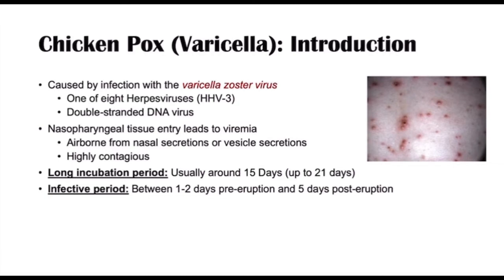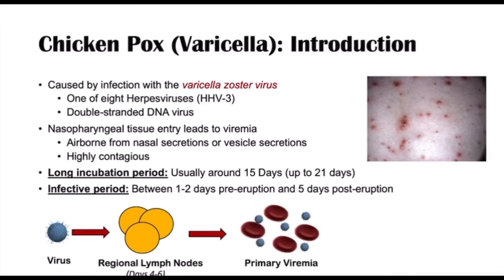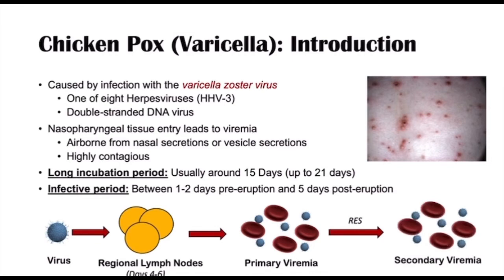The virus gains entry through the nasopharyngeal tissue and multiplies in regional lymph nodes between days four to six. Afterwards, the virus leads to a primary viremia — virus in the blood — and then enters into the reticuloendothelial system, or RES. Eventually there is another phase of viremia called secondary viremia, which occurs at around day nine. After the incubation period completes, we start to see eruption of vesicles.